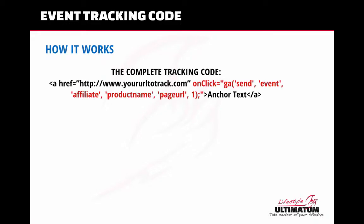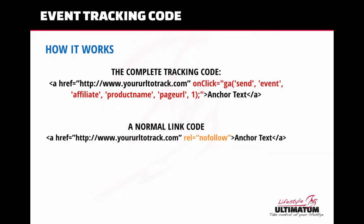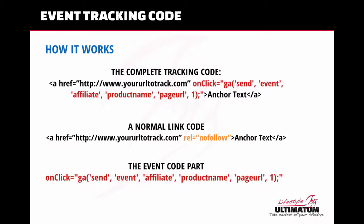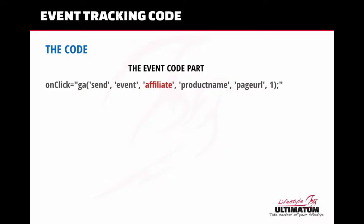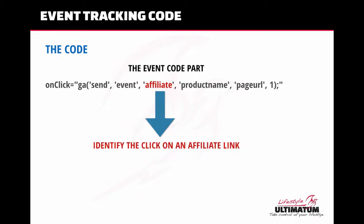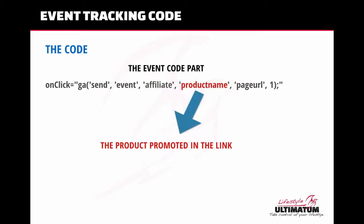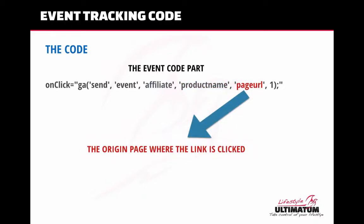Let's begin with some theory to understand how everything works. This is the complete code we will use to track events in Universal Analytics. The code is made of a normal link to create a classic link. We can add the nofollow tag if needed to tell Google not to consider the link too important. If we add the onclick part to the code, every time someone clicks the link it sends parameters: the affiliate tag to indicate it is an affiliate link click, the product name, and the page URL where the link was clicked. In this way, in Analytics we can know which page converts more.